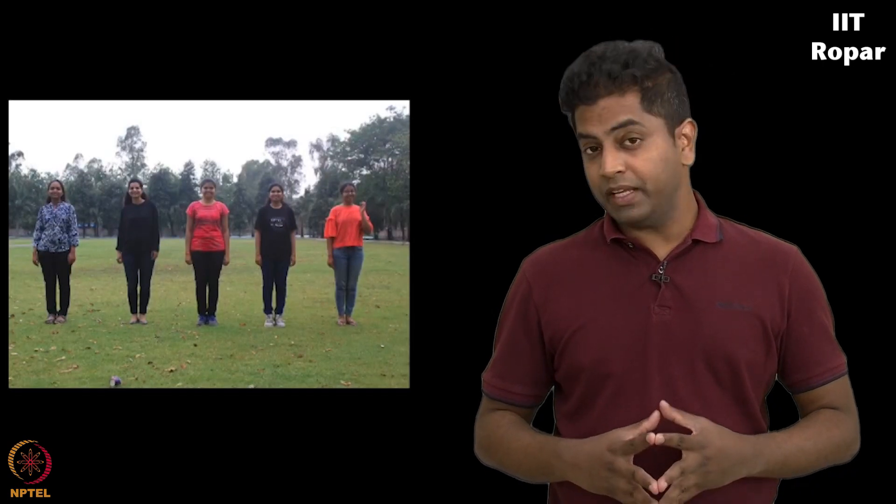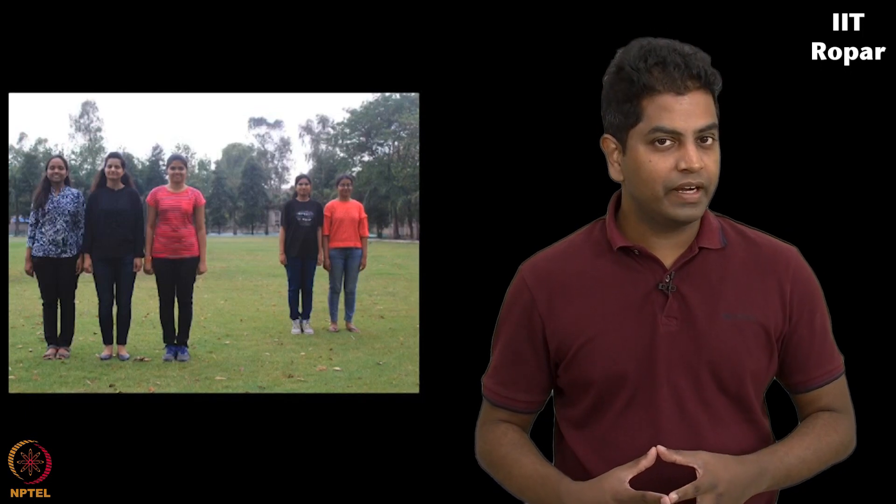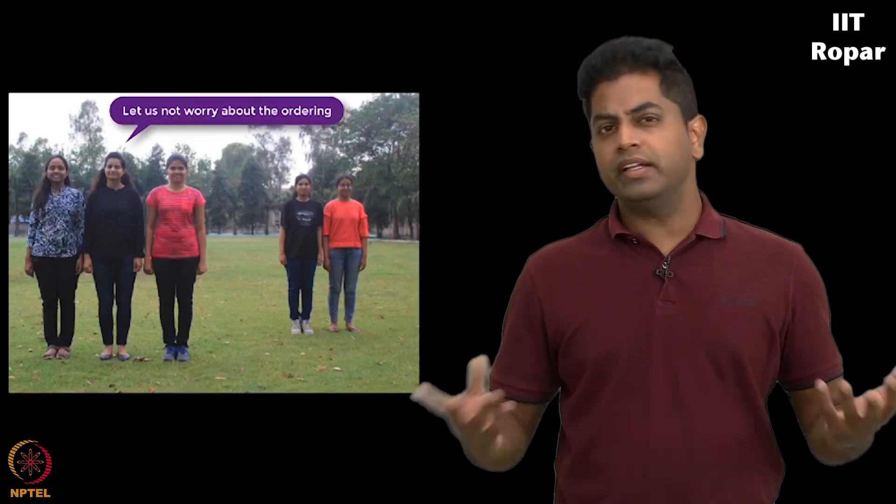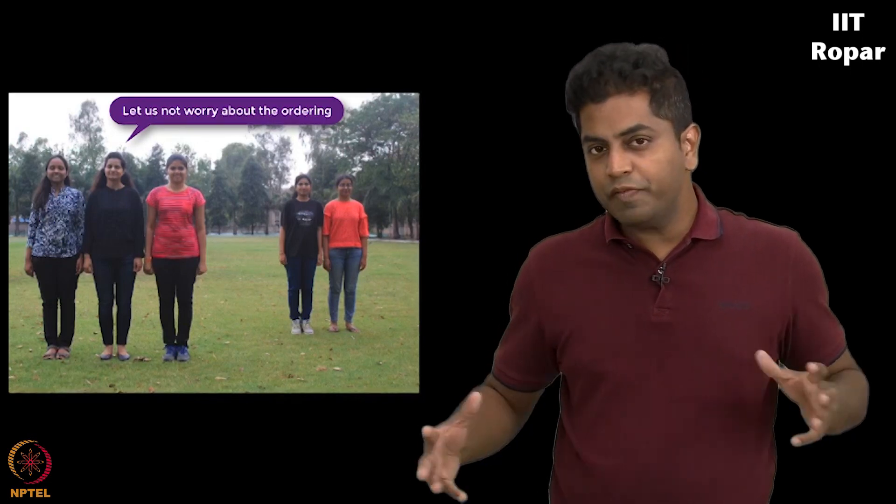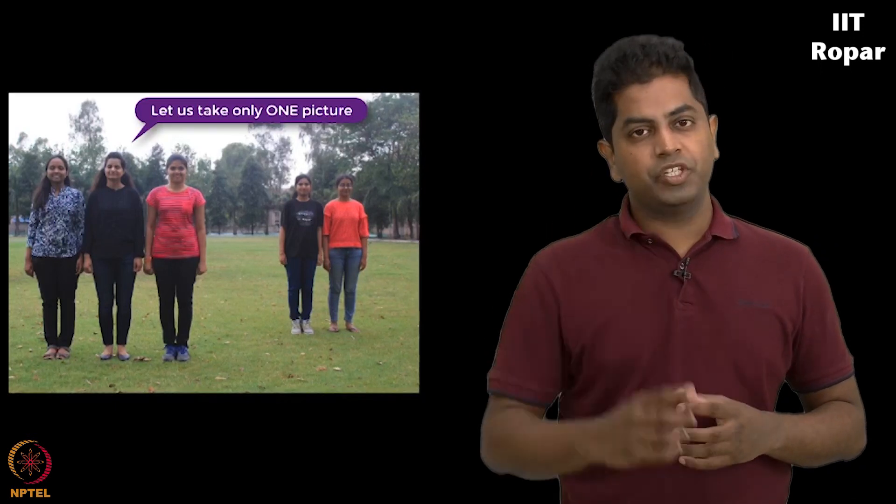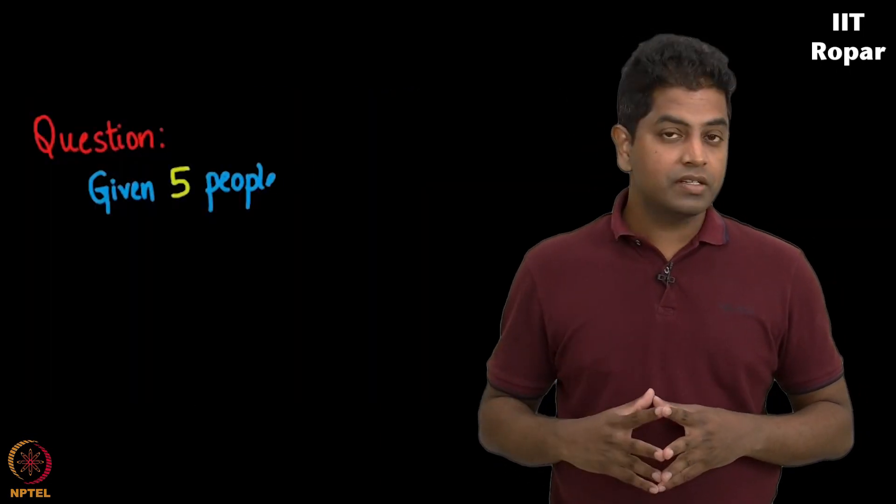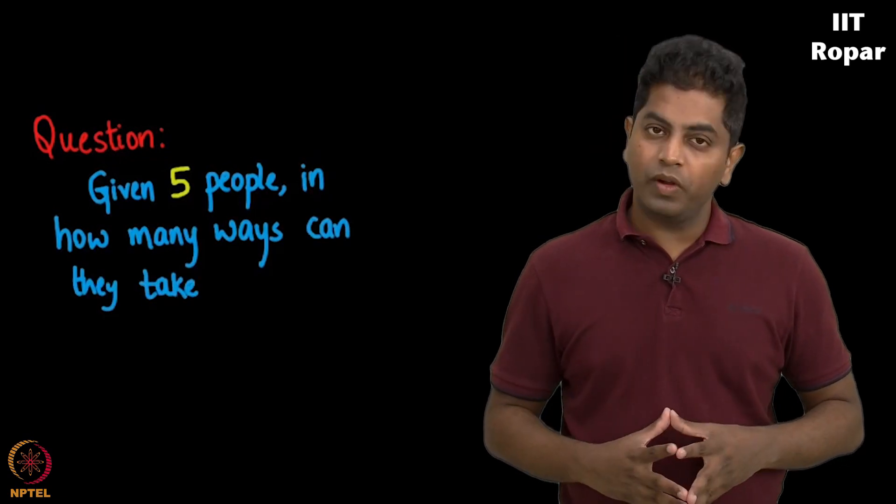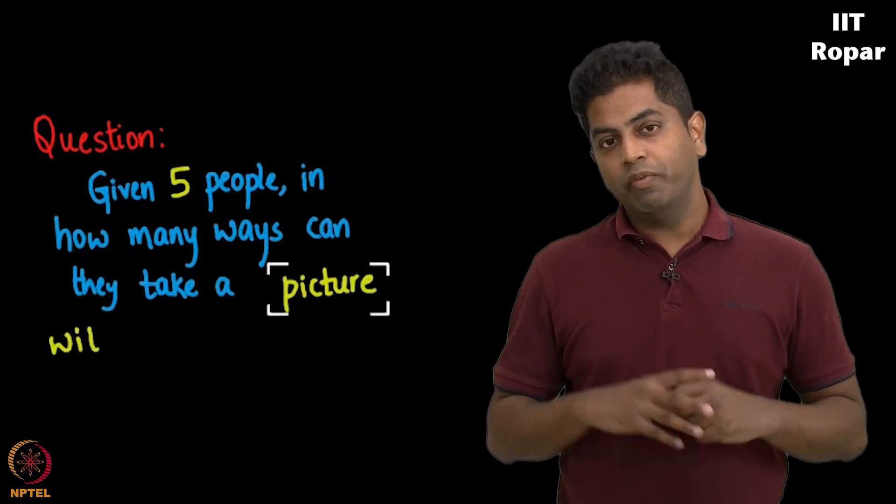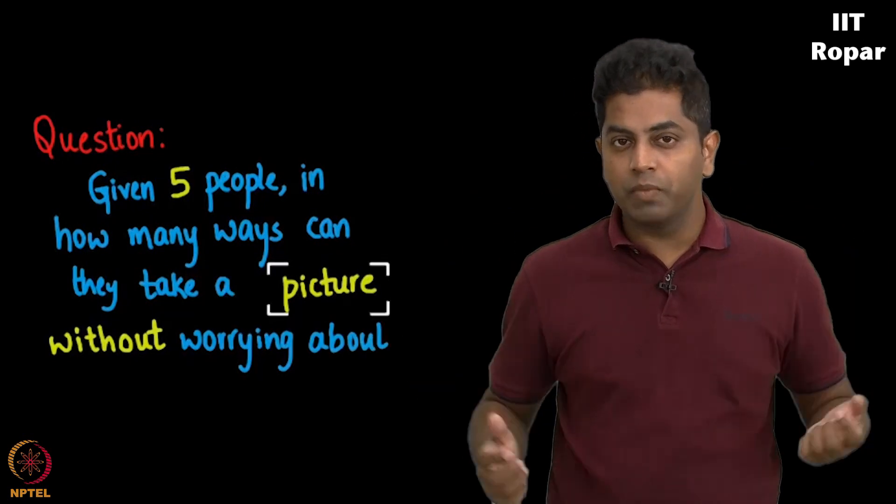Now, getting back to our five friends where three people came forward and took their photos in all possible ways, what if our friends decided order is not important? How does it matter? It is three of us taking a picture together that matters, so let us not try all possible positions with three of us. Let us just take one picture of all three of us. So, given five friends, in how many ways can three people come forward and take a picture without worrying about all possible orderings?